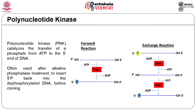Polynucleotide kinase is an enzyme that catalyzes the transfer of a phosphate from ATP to the 5-prime end of either DNA or RNA. Its enzymatic activity is utilized in two types of reactions. In the forward reaction, polynucleotide kinase transfers the gamma phosphate from ATP to the 5-prime end of a polynucleotide, which can be DNA or RNA. The target nucleotide is lacking a 5-prime phosphate either because it has been dephosphorylated or has been synthesized chemically. In the exchange reaction, target DNA or RNA that has a 5-prime phosphate is incubated with an excess of ADP. Polynucleotide kinase will first transfer the phosphate from the nucleic acid onto ADP, forming ATP and leaving a dephosphorylated target, then perform a forward reaction to transfer a phosphate from ATP onto the target nucleic acid.